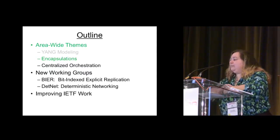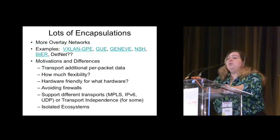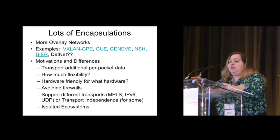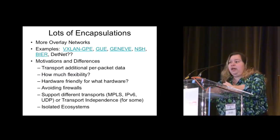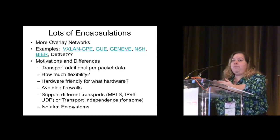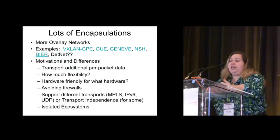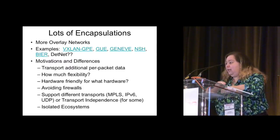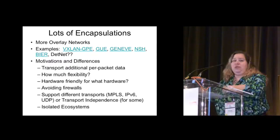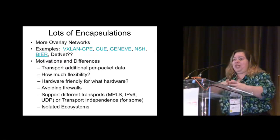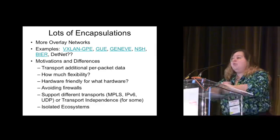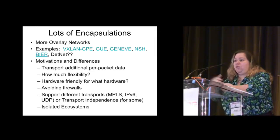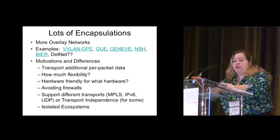Let me go on to data plane encapsulations. We're seeing more overlay networks and lots of encapsulations. A lot of them are coming from NVO3: VXLAN, GPE, GENEVE, NSH coming out of service function chaining work. BIER has an encapsulation that goes under MPLS. DetNet is looking at what its encaps are going to be. There are always motivations for a new data plane encapsulation and they always look really simple to get started — all you need is to carry just this little bit of extra data. Then you start getting into the complexities: how much flexibility do you have, hardware features, whether you're shipping it over UDP, entropy considerations, and so on.